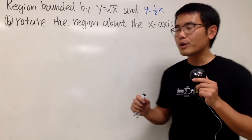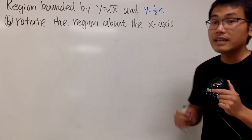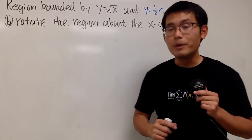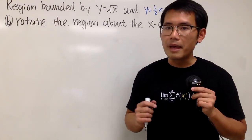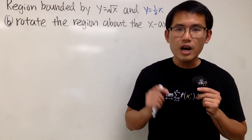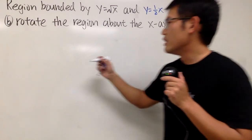Okay, second part. We are going to rotate the region about the x-axis and then we will find the volume. I will show you both the washer method and also the shell method. So have a look here.